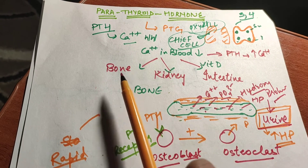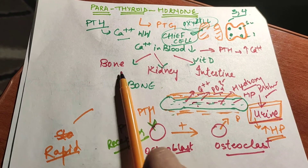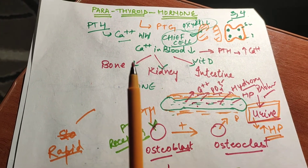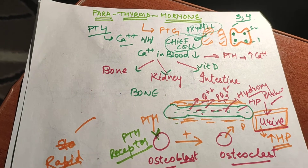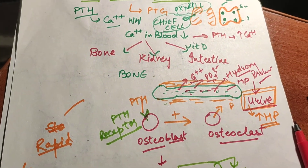PTH acts on bone, kidney, and intestine. The fastest action of PTH is on bone. The actions on kidney and intestine will be covered in the next video.